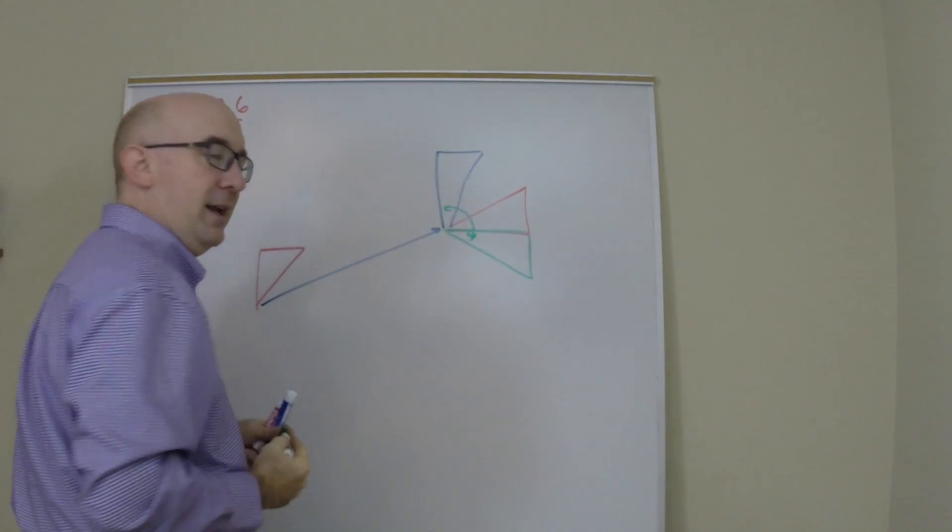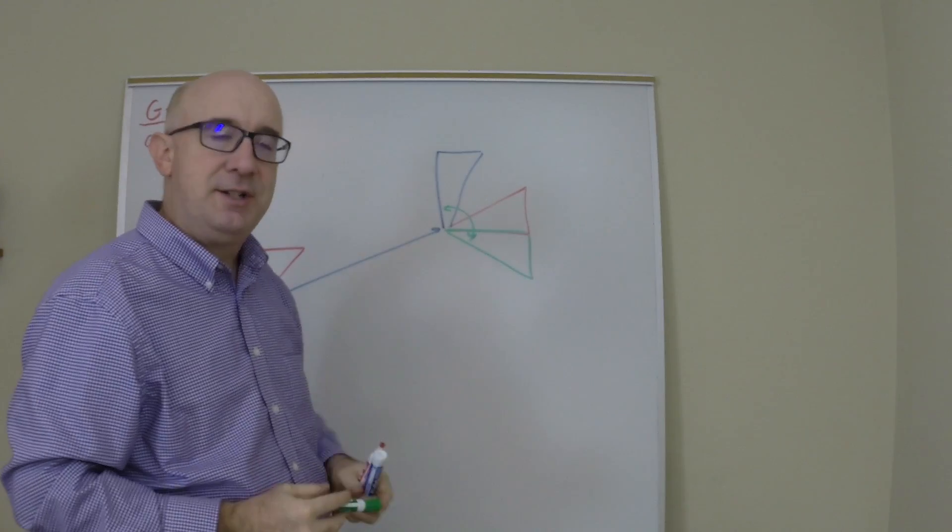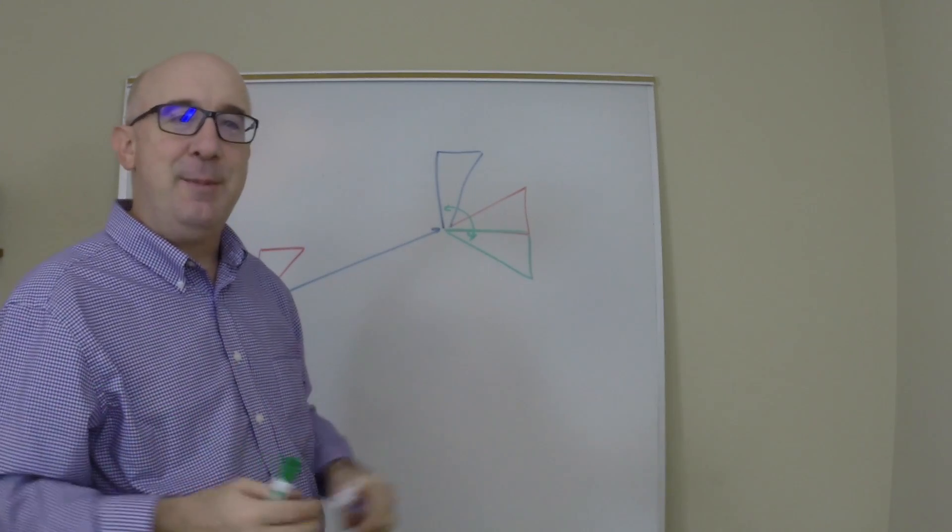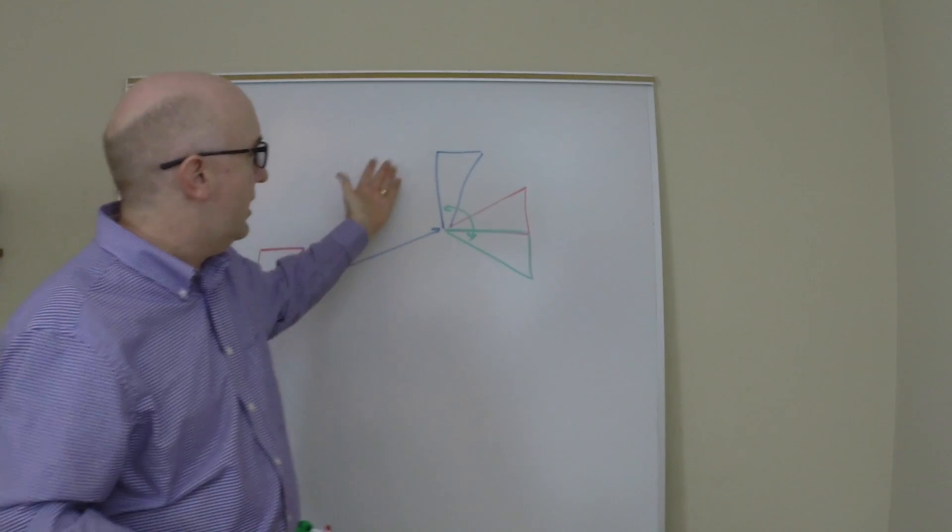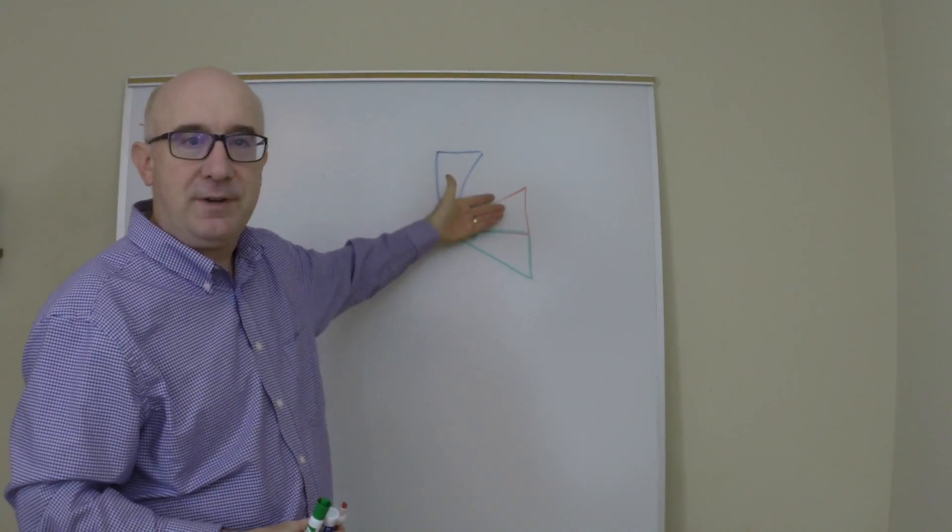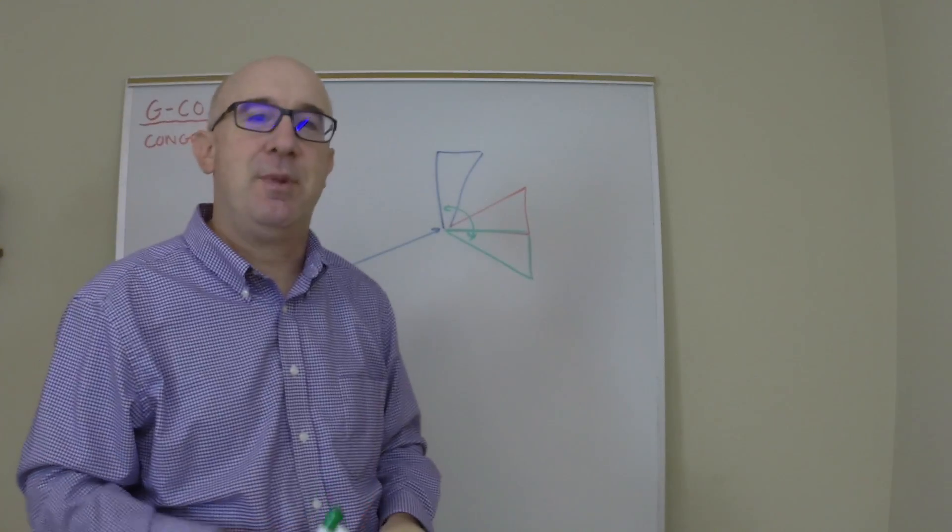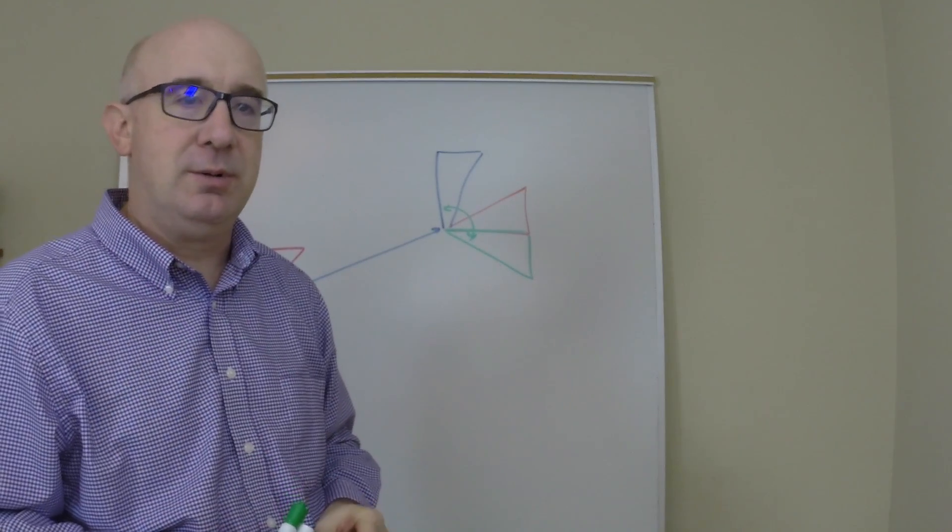And then finally, I do a reflection to place it onto this one. And then I'm able to establish that these are congruent. A translation, a rotation, and a reflection maps it onto the other shape. Therefore, it would be congruent.